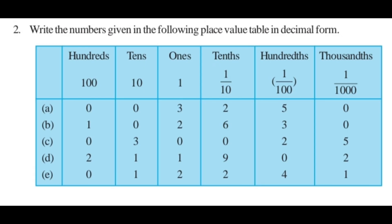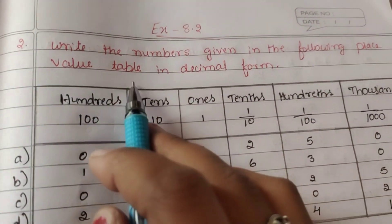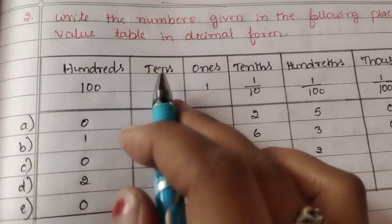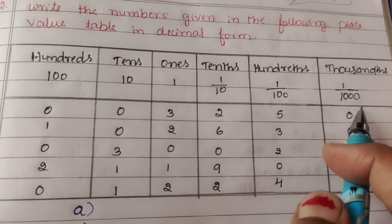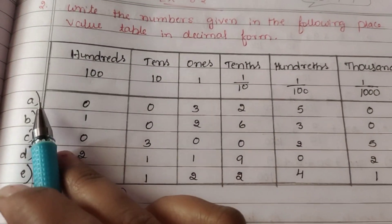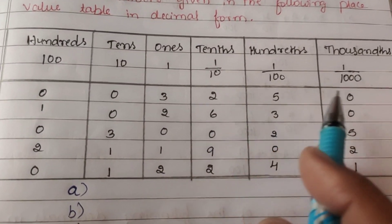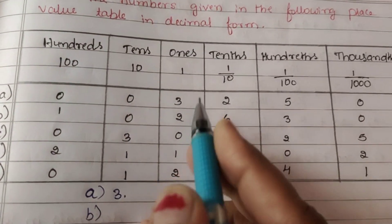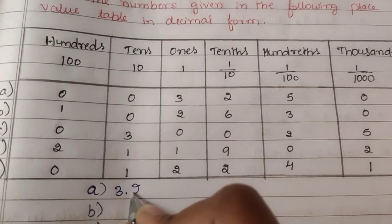Next question: write the numbers given in the following place value table in decimal form. Here we have a table with 100s, 10s, 1s, tenths, hundredths, thousandths. First one: 0, 0, 3, 2, 5, 0. Ones place is 3, tenths place is 2, hundredths place is 5, so the answer is 3.25.